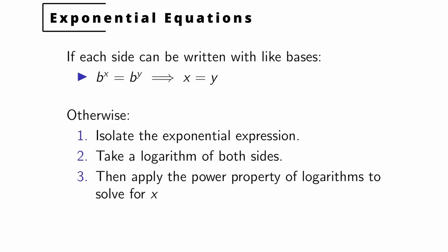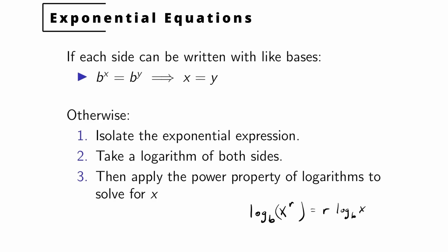If you can't do that, then you're going to have one or two exponential expressions. You want to isolate the exponential expression, or if you have two of them, have one on each side of the equation. Then you take a logarithm of both sides — I'll assume you're comfortable with logarithms and exponent rules. You apply the power property of logarithms to solve for X. The power property states that log base B of X to the R power equals R times log base B of X.